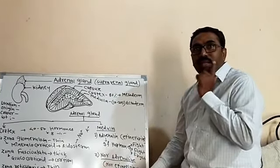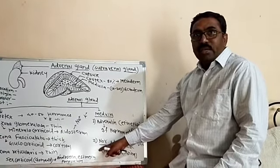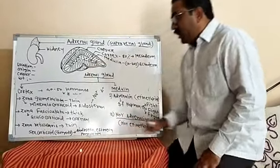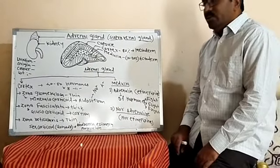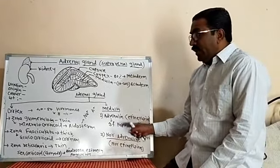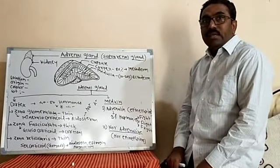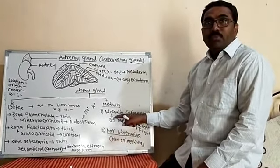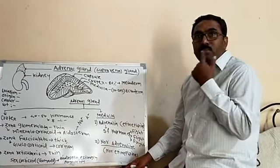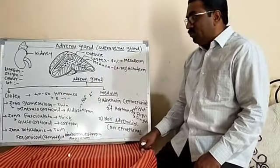In males, these hormones help in the formation of facial hairs, pubic hairs, and axillary hairs. In females, they also help in the formation of pubic and axillary hairs. However, when hypersecretion of these sex corticoid hormones occurs in females, it leads to the formation of facial hairs in females as well.